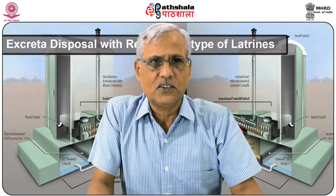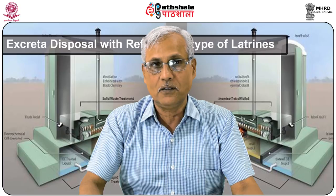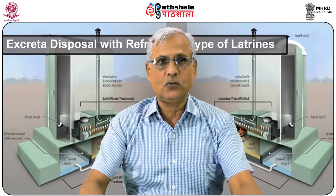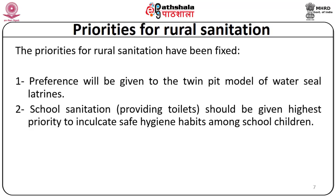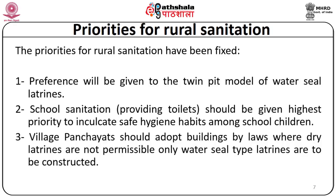A number of priorities have been fixed for rural sanitation. Number one: preference will be given to the twin pit model of water-seal latrines, particularly in rural areas. School sanitation — providing toilets in schools — should be given highest priority to inculcate safe hygienic habits among school children. The idea is that if hygienic practices are inculcated among school children, they will be carried out throughout their entire life. It has also been observed that 50% of messages are directly passed from children to their parents, so whatever they learn in school is likely to be taken into their homes as well.